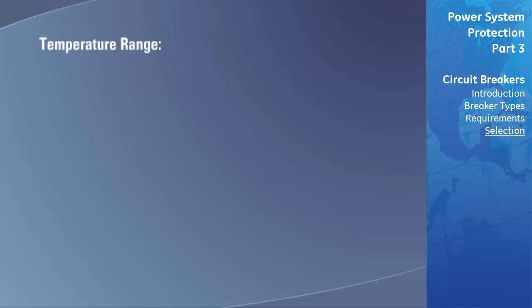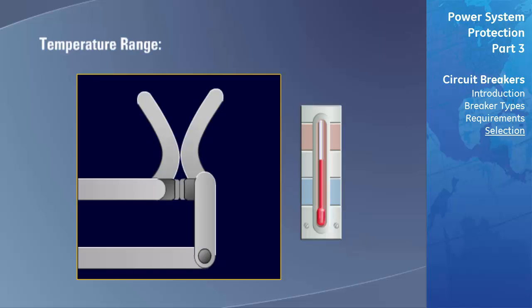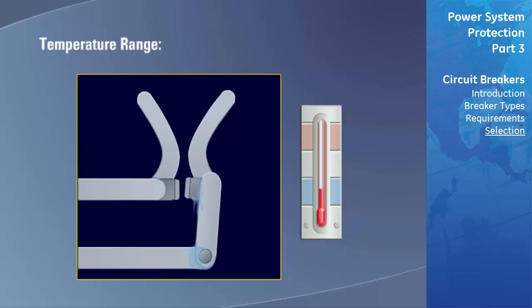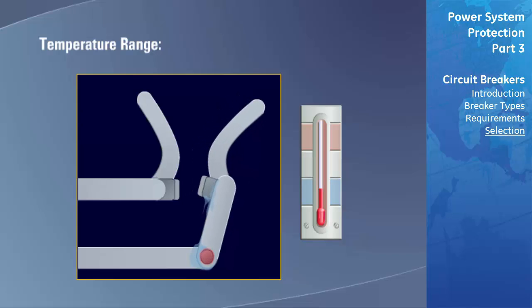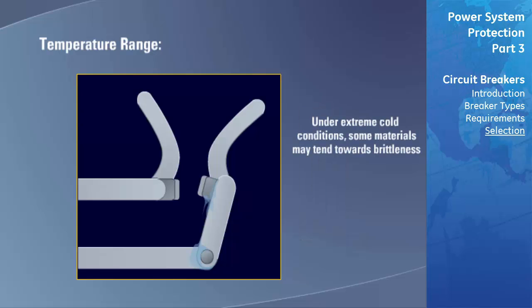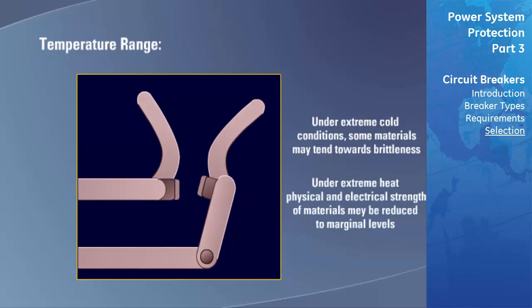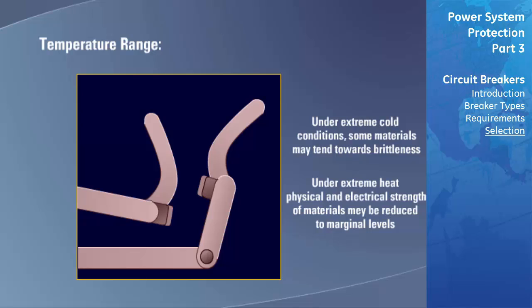Temperature affects circuit breaker operation. Below a specific temperature, mechanism operation may not be reliable due to possible freezing of condensation, freezing of lubricants, or mechanical interference from changes in physical dimensions of components. Some materials may tend toward brittleness in extreme cold. Under increased heat, physical or electrical strength limits of some materials may be reduced to marginal levels, some materials can begin to melt, and the useful life of insulation can be seriously reduced. The application engineer should take each of these factors into consideration.